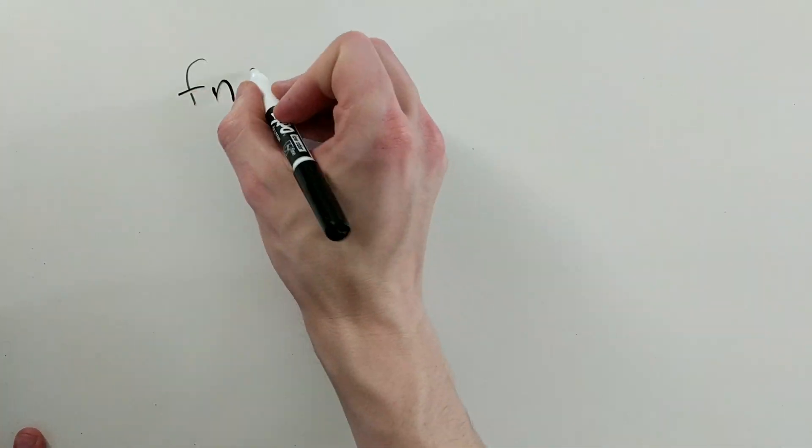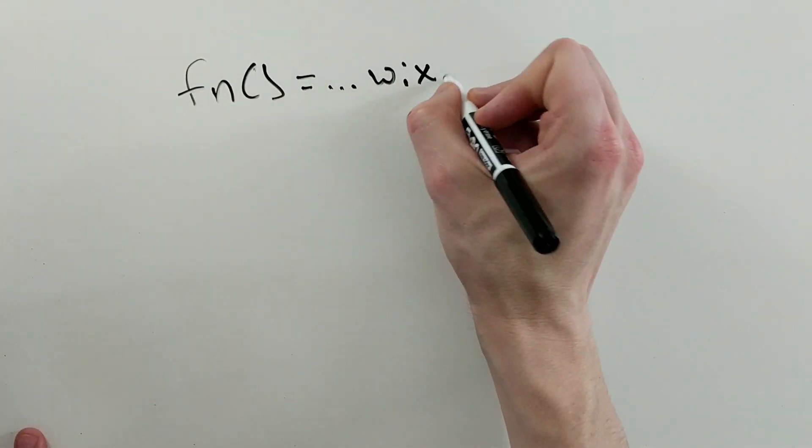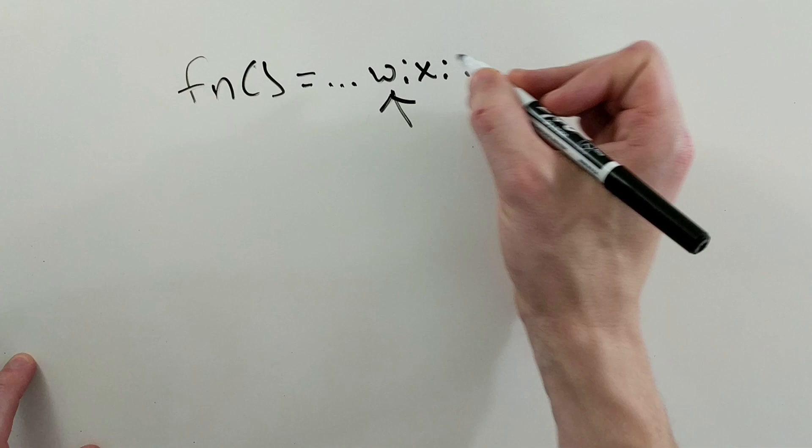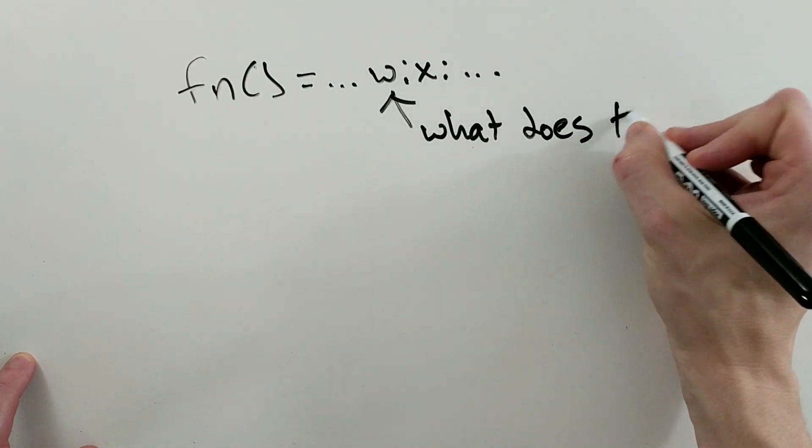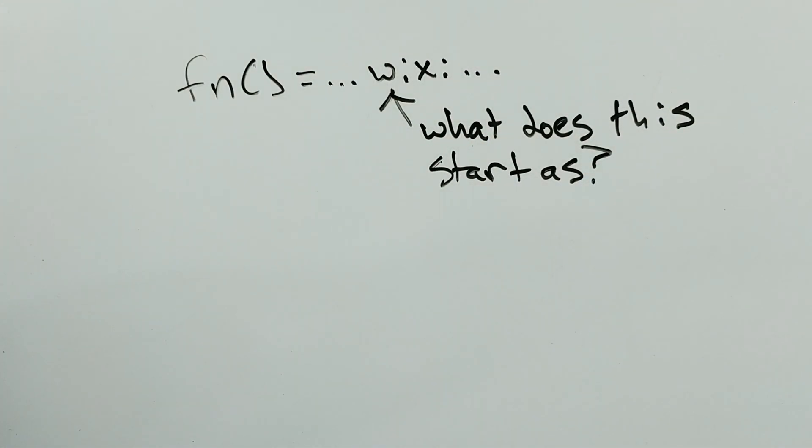One question that remains is that given our initial function, how do we choose the coefficients? Rather, when we create neural networks, how do we choose the starting weights?